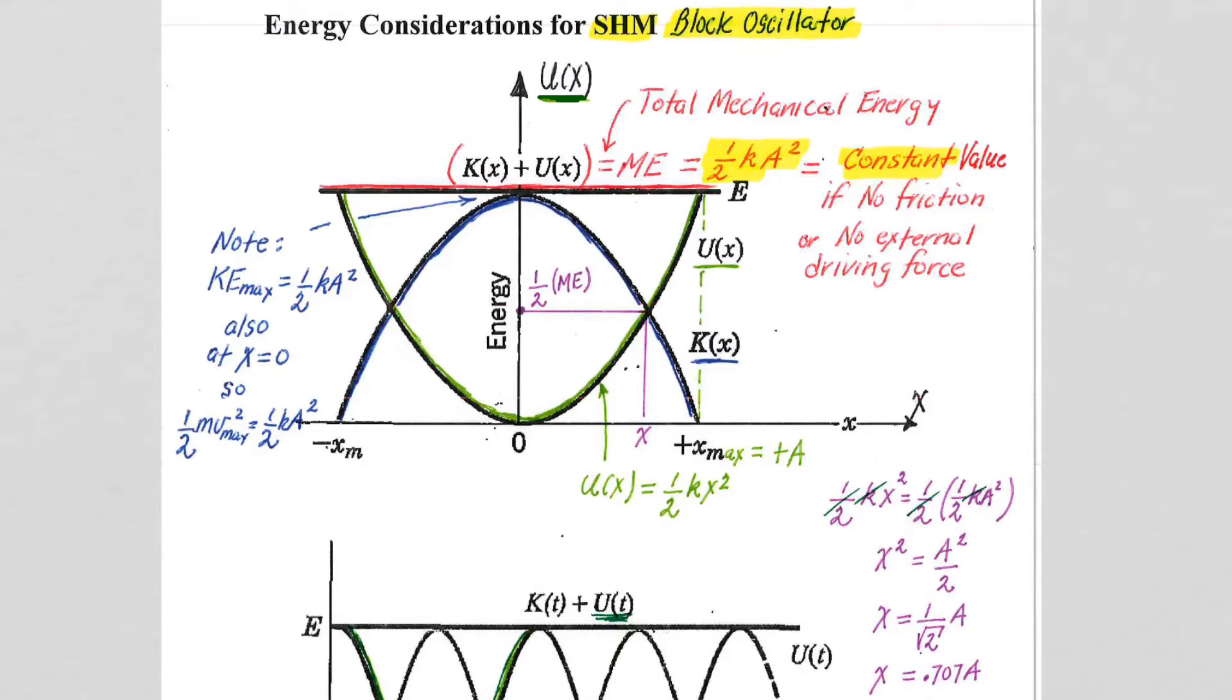So we have a maximum potential energy initially when we pull the block to position x equals positive a, and the total energy we have is one-half ka squared. Now that mechanical energy, the total energy, one-half ka squared, which is also the maximum potential energy, after this point in time, is going to get shared between potential and kinetic energy.